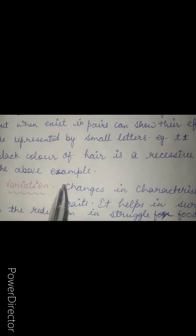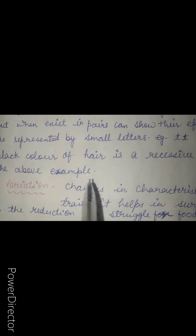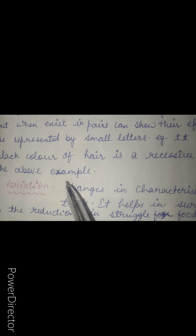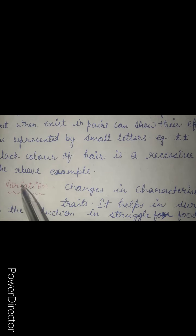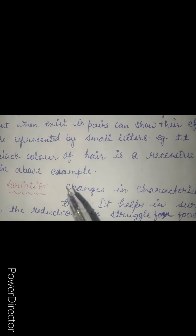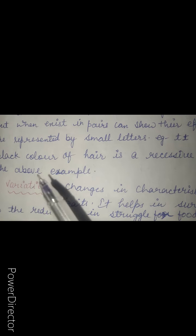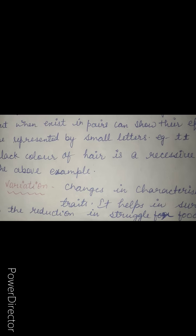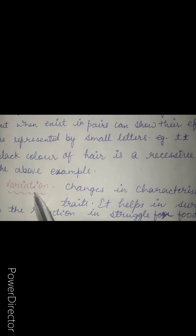Variation hum kise kehte hain? Jo humari traits ya characteristics hain, aapne dekha sab ki different hain. Kisi ki aankhon ka color blue hai, kisi ka black hai, kisi ka brown hai, kisi ka grayish hai — yeh sare colors variation hain. Kisi ka hair type curly hai, kisi ka straight hai, kuch curved hairs hain. Some have black hair color, some have golden hair, some have brown hair. Toh yeh sab variation hai.